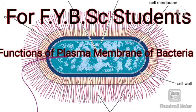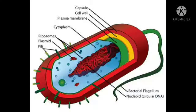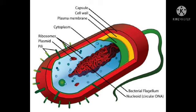Good morning students, we are going to study about the functions of plasma membrane. This is for FYBSc class. We know that plasma membrane is nothing but the cell membrane, also called cytoplasmic membrane. It contains 20 to 70 percent protein, 28 to 80 percent lipids, 1 to 5 percent oligosaccharides, and 20 percent water. It has a continuous bilayer of phospholipid molecules with globular proteins attached to it.